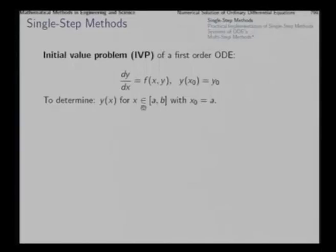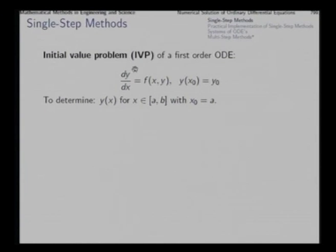We could also ask for the values of y for x values less than x₀ as well; it is equivalent. So we want to determine y of x for x in an interval a to b, with a being the initial value x₀. Now this is in a way somewhat analogous to an integration problem, since we have dy/dx and we want to find y — so it is in a way integration. Therefore you will find that the numerical solution of ODEs has a lot of similarities with the numerical integration problem.